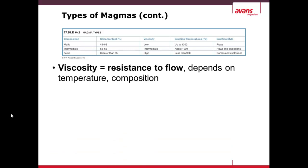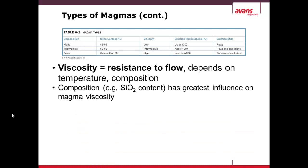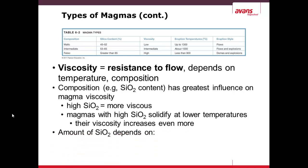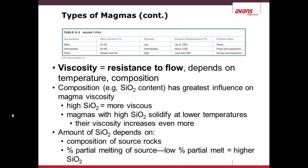Viscosity is a resistance to flow, and it depends on temperature and composition. Mafic magma has a low percentage of silica, while felsic has a large percentage of silica. High silica means it's more viscous. Magmas with high silica solidify at lower temperatures, so their viscosity increases even more. The amount of silica depends on the composition of the source rocks — what type of rocks have melted — and the percentage of partial melting. A lower percentage of melting results in higher silica content and therefore higher viscosity.